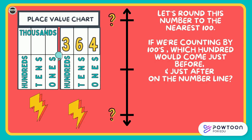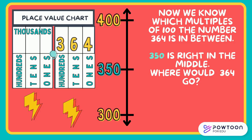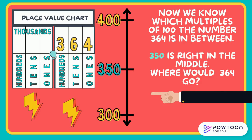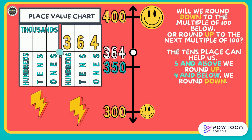So I know 842 rounded to the nearest 100 is 800. Let's round this number to the nearest hundred. If we are counting by hundreds, which hundred would come just before and just after on the number line? Pause the video and figure that out with your partner. Now we know which multiples of 100 the number 364 is in between. Down below we see 300, up above we see 400, and right in the middle we see 350. So where would 364 go? Point to it on the number line. The tens place can help us — 5 and above we round up, 4 and below we round down. I'm looking at the tens place of 364 and I see a 6. That's 5 and above, so I know 364 rounded to the nearest hundred is 400.